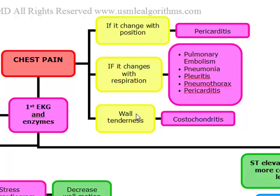If you rule these things out and based on the history you think this could be coronary artery disease in etiology, you're going to do an EKG and cardiac enzymes. If it's a clear-cut case of ischemic pain with a very strong history of coronary artery disease, you're going to treat first with aspirin. Enzymes include myoglobin, CKMB, and troponin. Myoglobin is the first enzyme to rise. CKMB is best to detect reinfarction. And troponin is usually your best overall test.